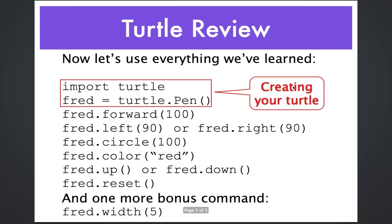Let's stop there and review everything we've learned so far. To create our turtle, we needed to type two commands in the red box. We learned how to tell the turtle to move forward — the number in the parentheses, the argument, is in pixels. We learned how to turn left, and you can also turn right. We learned to draw a circle, to change the color — don't forget the color name needs quotes around it or it won't work right. We learned how to pick up or put down the pen so we're either drawing or moving without drawing, and we learned about reset. I'm going to leave one bonus command here and not tell you what it does — go ahead and try it out and see if you can find out for yourself.